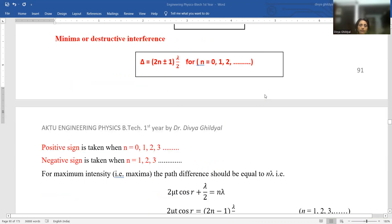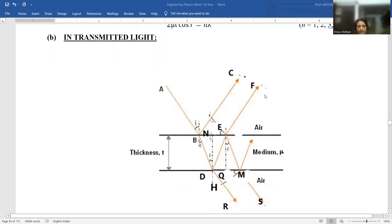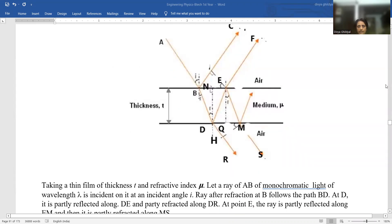We discussed the case of reflected light. Now what happens in transmitted light? Have a look at this ray diagram. And remember,